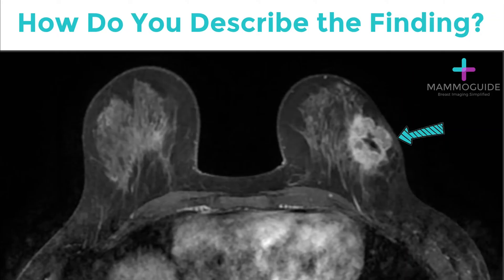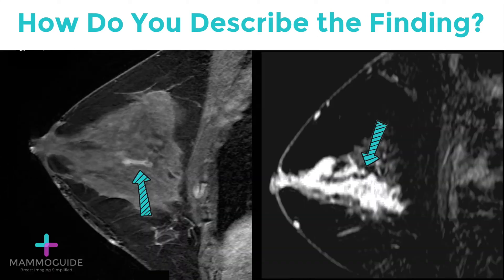How would you describe this finding in the left breast? Is it a mass or non-mass enhancement? Because this has defined borders, this enhancing lesion is a mass. How about these abnormalities in the right breast?